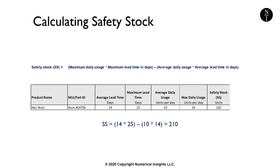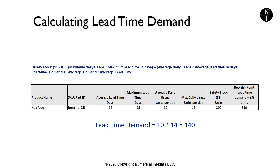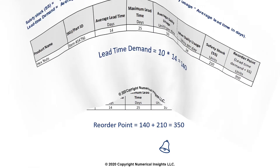Next, we need to realize that we use up a certain number of this item in the length of time it takes our supplier to make a delivery. To estimate the number we'll use during this time, we multiply the average daily demand by the average lead time. Adding our safety stock level to the lead time demand gives us our reorder point.